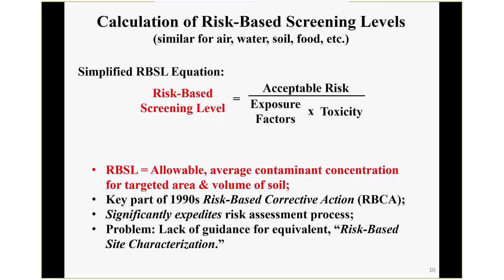We can rearrange this equation and calculate risk-based screening levels — a huge step forward in the 1990s. Risk-based screening levels equal some acceptable risk divided by exposure factors times toxicity. The risk-based screening levels are the allowable average concentration of a contaminant in the media for a targeted area and volume of soil. This was key in risk-based corrective action in the 1990s, significantly expediting the risk assessment process. The problem is we've never had guidance on how to do a risk-based site characterization to compare data with risk-based corrective action.